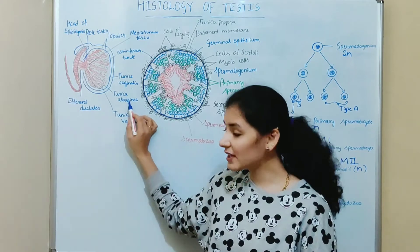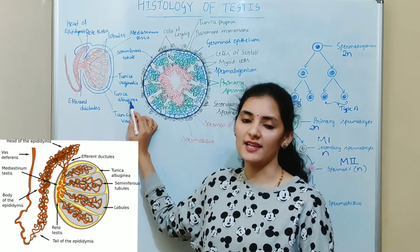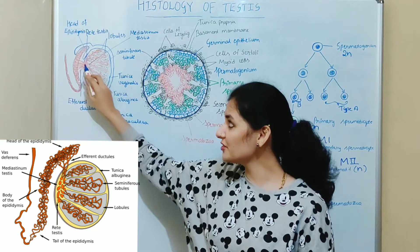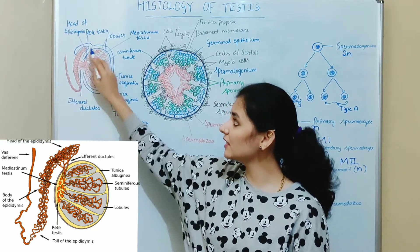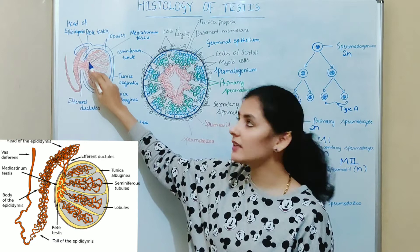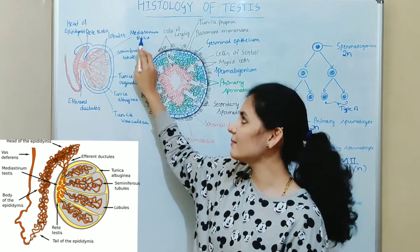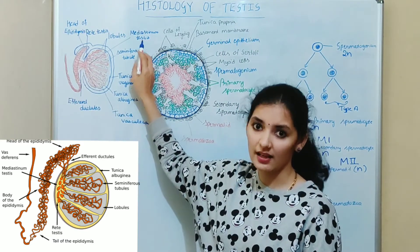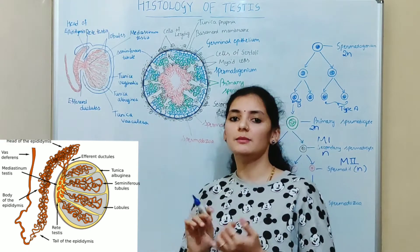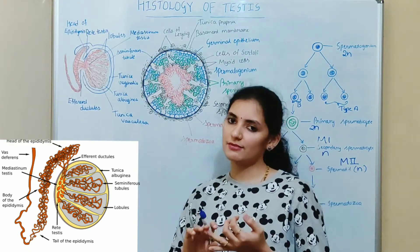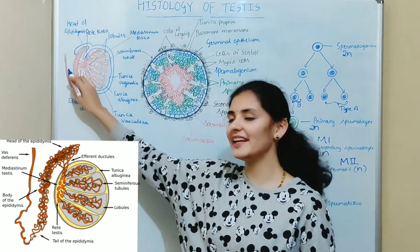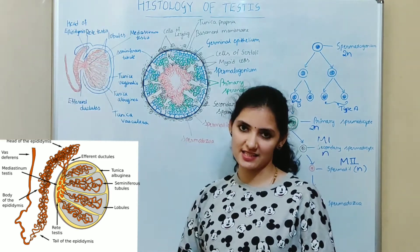The tunica albuginea layer is called the capsule of testes, and at the posterior end, this tunica albuginea layer thickens to form a region called mediastinum testes. Through this mediastinum testes, the blood vessels, lymphatic vessels, and the ducts of the gonads enter and exit the testes.